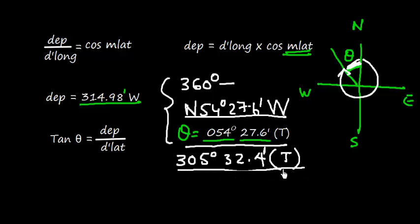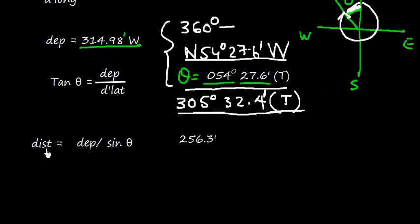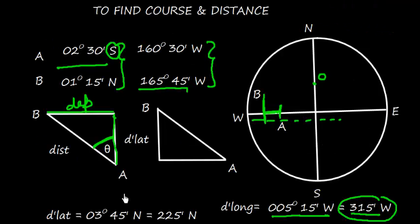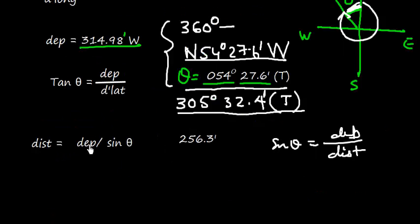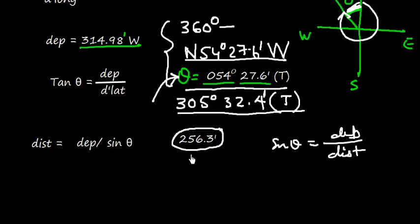We also need to find distance. Distance can be obtained by the formula: distance equals departure divided by sine θ, because sine θ equals departure over distance, where departure is the perpendicular and distance is the hypotenuse. We put in the value of departure and the angle θ, being very careful to use the full decimal precision of θ, and we get the final distance.